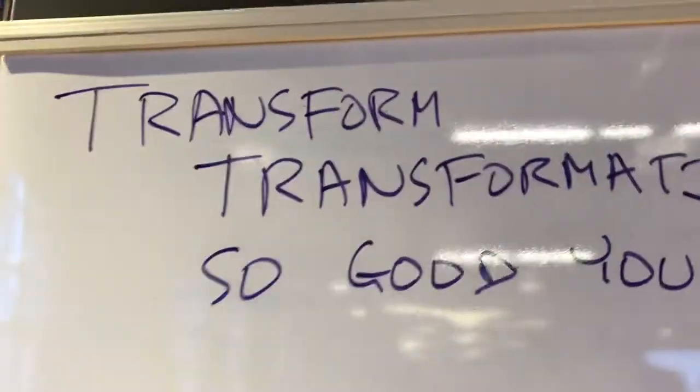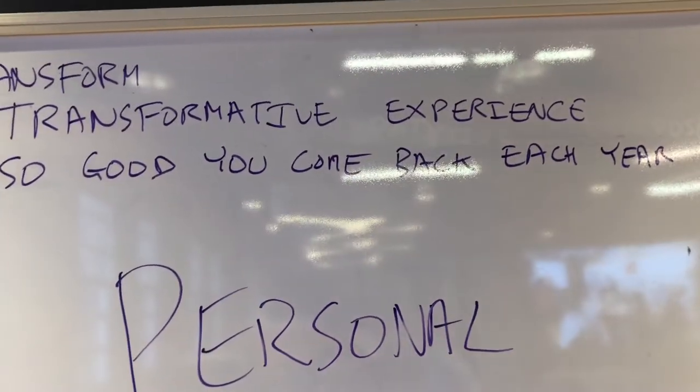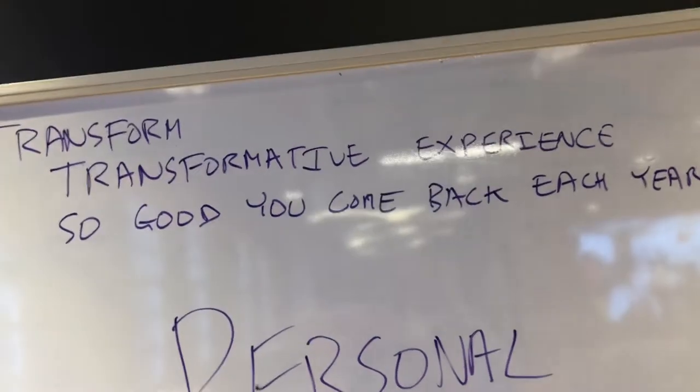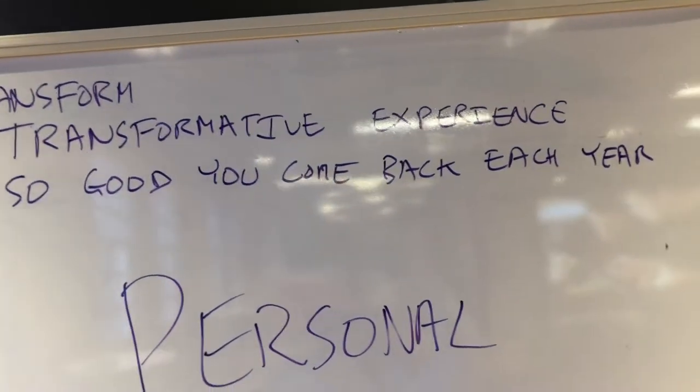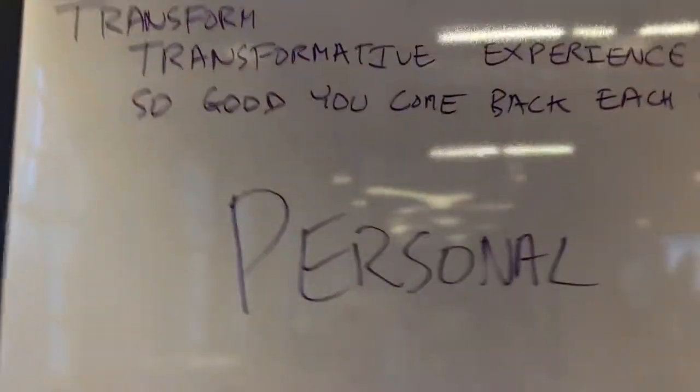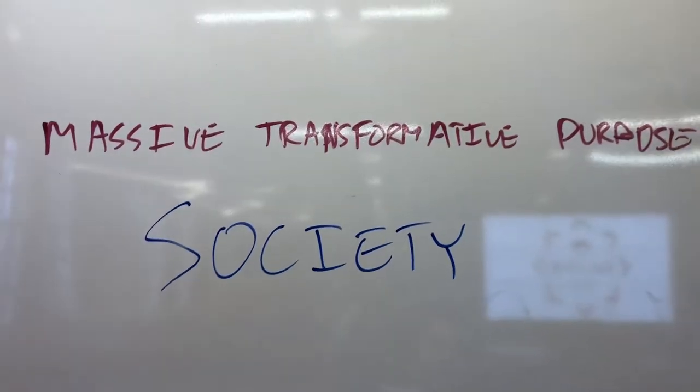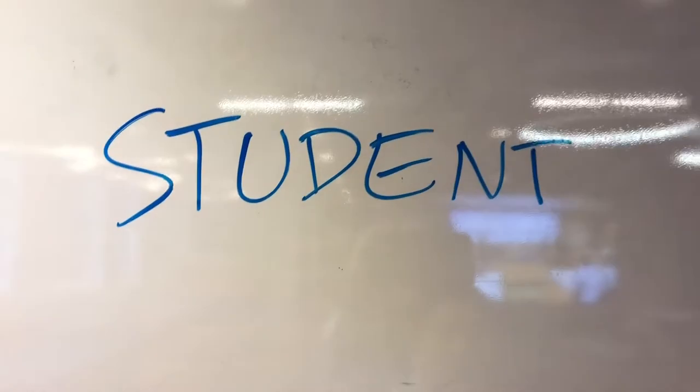So let's start at the beginning. The DNA for Transform is about a transformative experience and the bar we've set is it's so good that you want to come back each year. There are five ways that we are thinking about transformation: personal, business and career, society - your massive transformative purpose, student, and Duke.